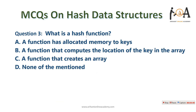The next question: what is a hash function? In question one, our hash function was (3x + 4) mod 7. Option B states: a function that computes the location of the key in the array. That is exactly what a hash function does — it tells us where to add a key into the array. So option B is the most correct answer.